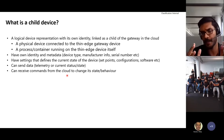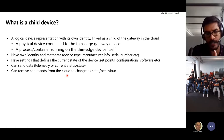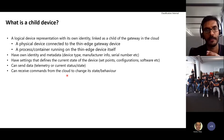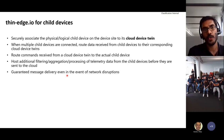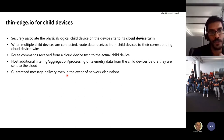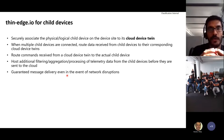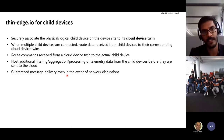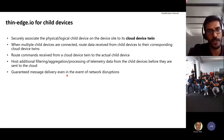So basically, child devices need pretty much everything that the thin edge gateway device itself has, but with their own dedicated independent identity. As the thin edge platform, the first thing we need to provide is the secure association of a physical child device in the field to its cloud device twin — its logical representation in the cloud — so that any data coming from the physical device is associated to its twin in the cloud.